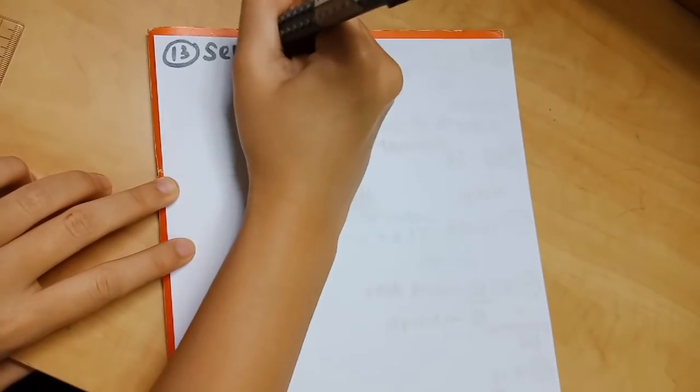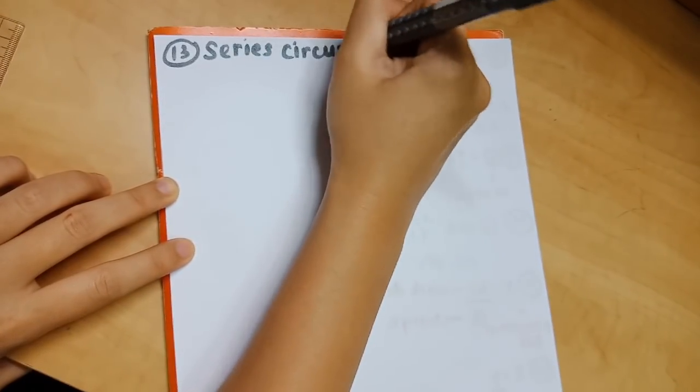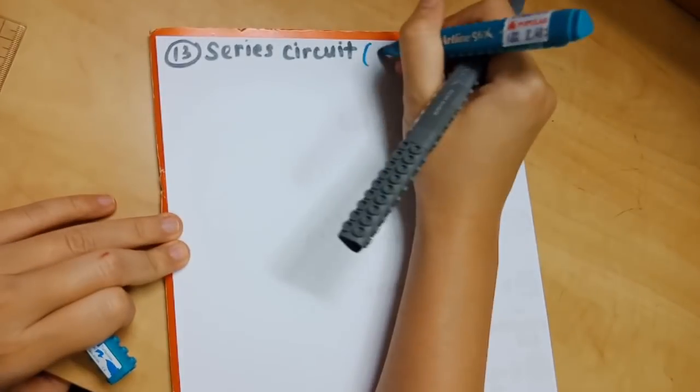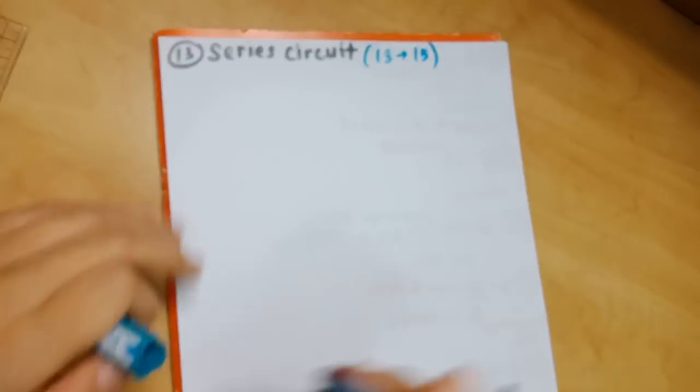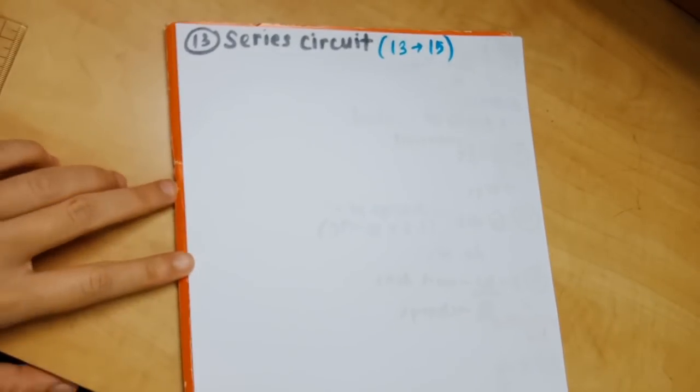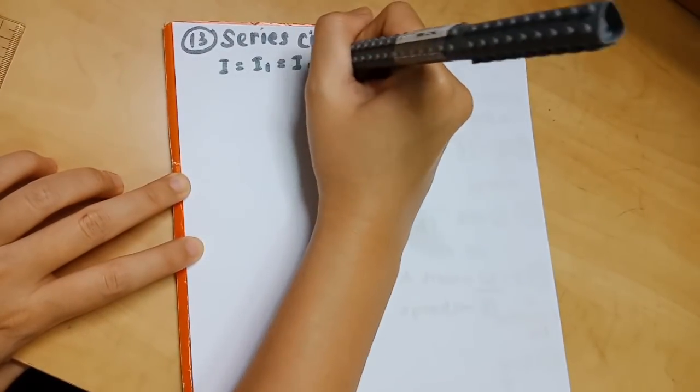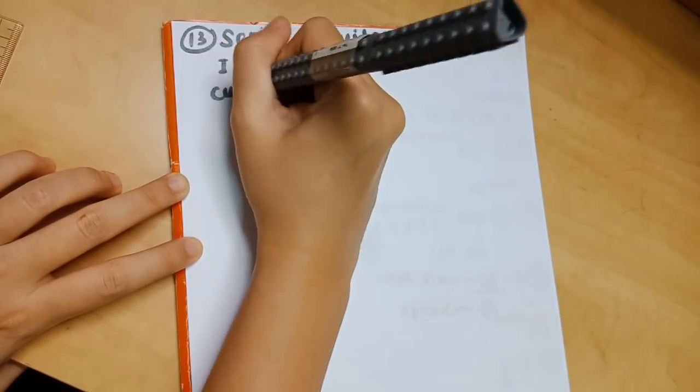Number 13 is for series circuit. Actually numbers 13 to 15 are all on series circuit. Formula 13 is i equals i1 equals i2 equals i3, because current is the same at all points throughout the circuit.